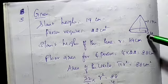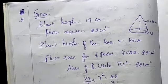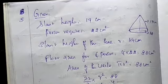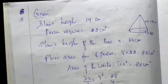Now, the slant height is 19 cm. Each person requires 22 cm². We know the slant height of the cone is 19 cm.